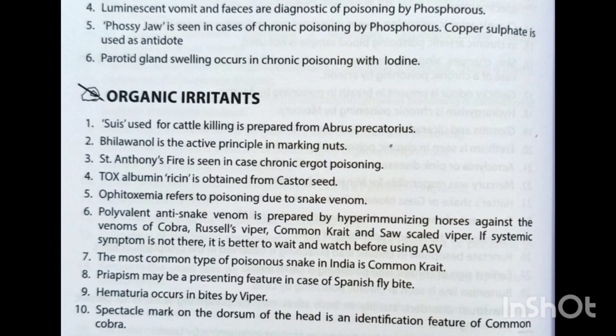The most common type of poisonous snake in India is the common krait. Priapism may be a presenting feature in Spanish fly bite. Hematuria occurs in bites by viper. Spectacle mark on the dorsum of the head is an identification feature of the common cobra. The venom of cobra and krait is neurotoxic.